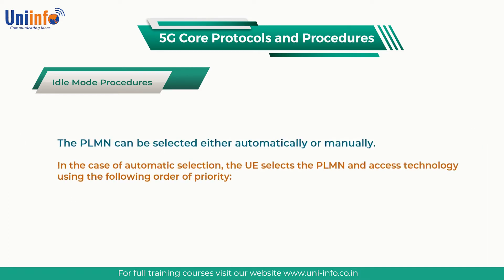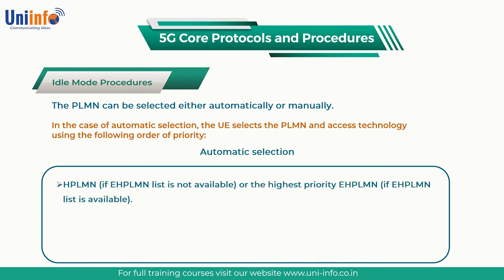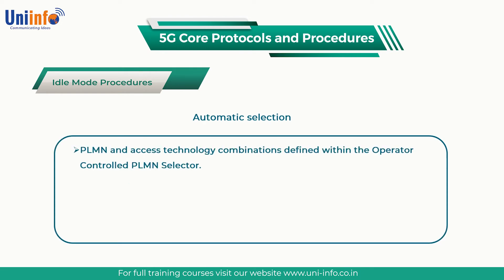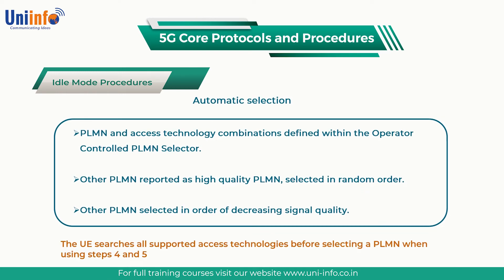The PLMN can be selected either automatically or manually. In the case of automatic selection, the UE selects the PLMN and Access Technology using the following order of priority: 1. HPLMN if eHPLMN list is not available, or the highest priority eHPLMN if eHPLMN list is available. 2. PLMN and Access Technology combinations defined within the user controlled PLMN selector. 3. Other PLMNs reported as high quality, selected in random order. 4. Other PLMNs selected in order of decreasing signal quality. The UE searches all supported access technologies before selecting a PLMN when using steps 4 and 5.